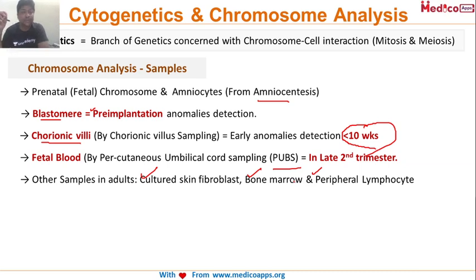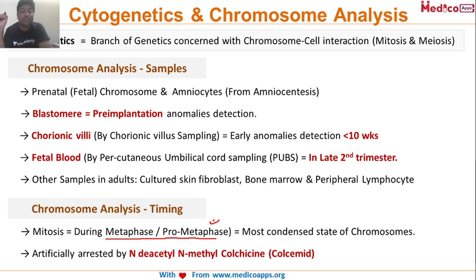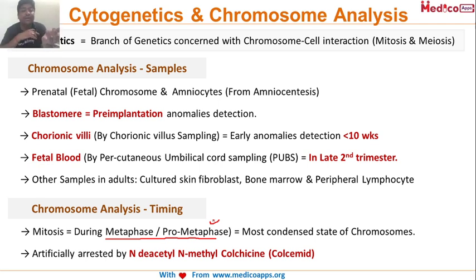The question may ask: in an adult, what can be used for cytogenetic analysis? The options would be cultured skin fibroblasts, bone marrow, peripheral lymphocytes — and actually all three can be used. This is a very important MCQ. Chromosomal analysis is typically done during the metaphase or pro-metaphase phase because in this phase chromosomes are most condensed, so they take up dyes and are easily visualized under a microscope.